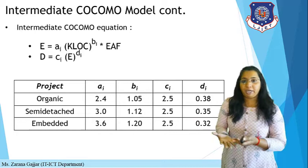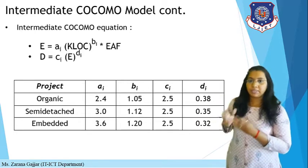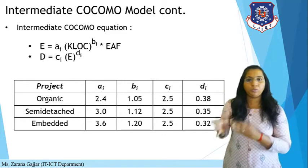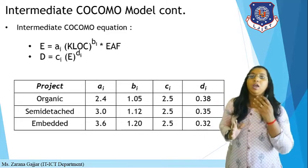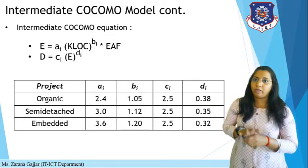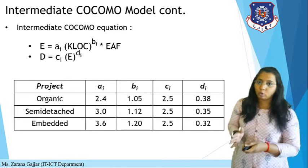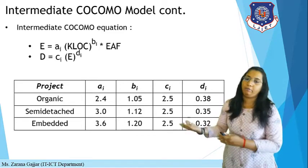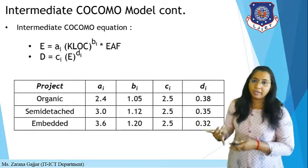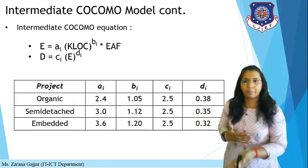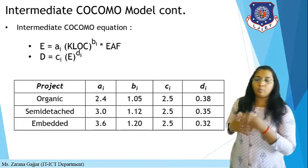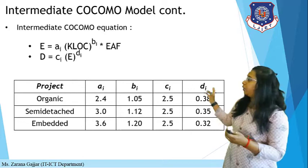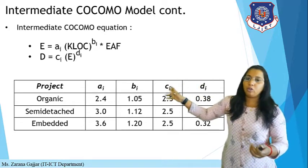For the intermediate COCOMO model, the formula is almost similar to the basic COCOMO model, except that in the effort formula, we multiply the basic value by the EAF. EAF stands for Effort Adjustment Factor, derived from the 15 parameters. Once you calculate effort, you can easily calculate development time. E is effort and D is development time. The constants for organic, semi-detached, and embedded types remain as defined in the basic COCOMO table.